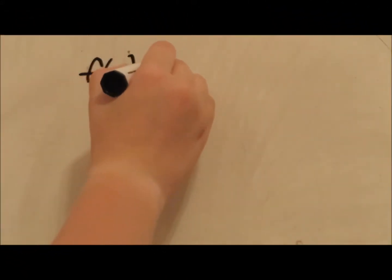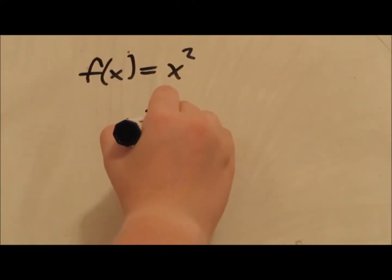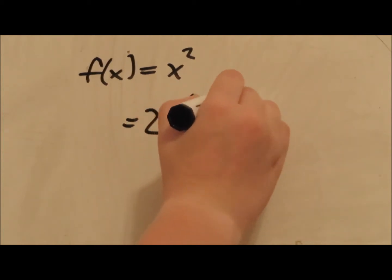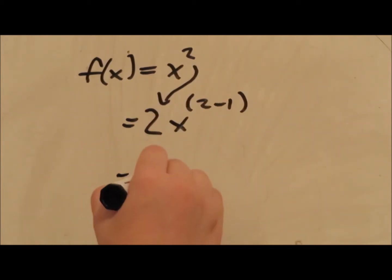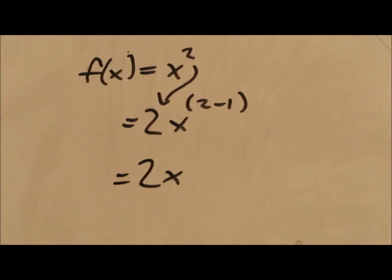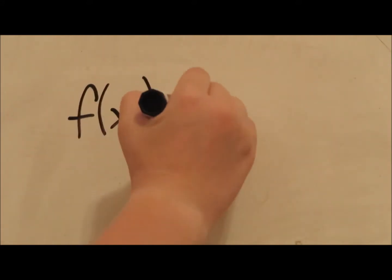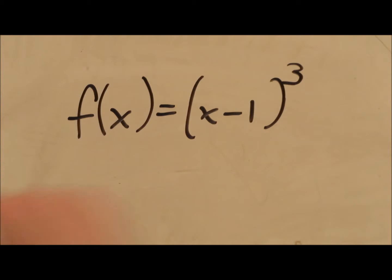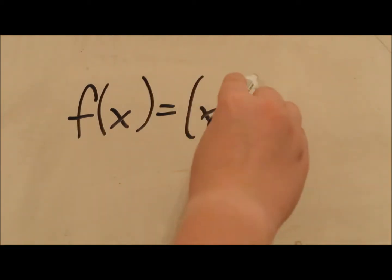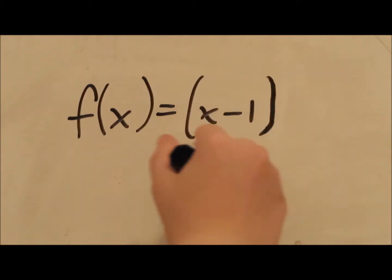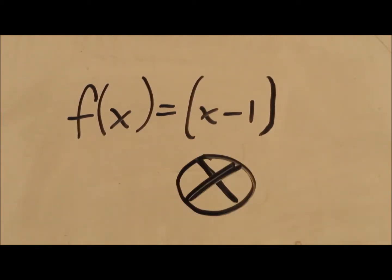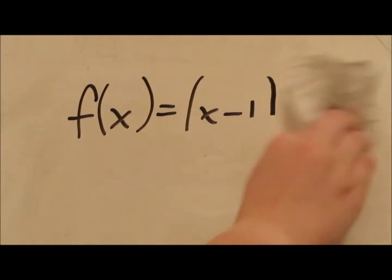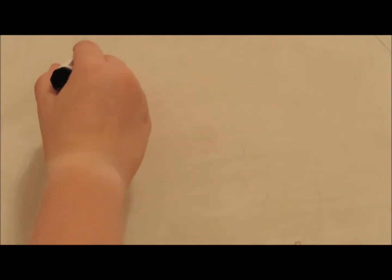That's an easy one. When you have normal equations like this one, you just take the derivative like usual. But when you have something like this, where the function has parentheses and an exponent, you have to use the chain rule. Why is that? Because if you didn't, it would be wrong. If the exponent weren't there, the function would look like this, and that's a different function than the one you try to derive without the chain rule.